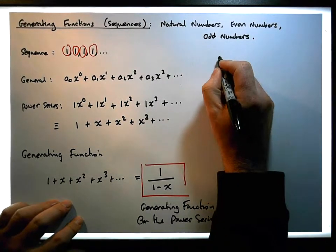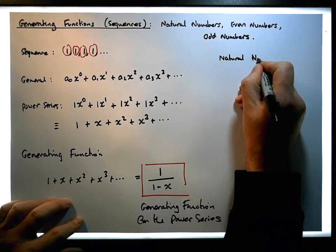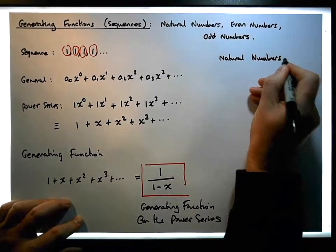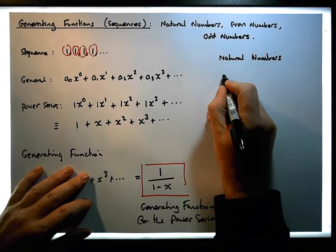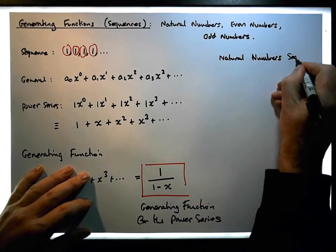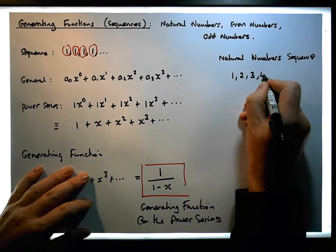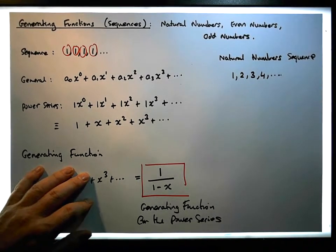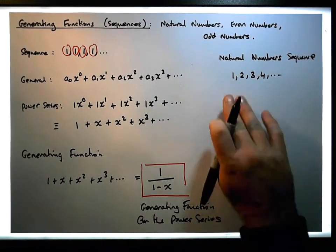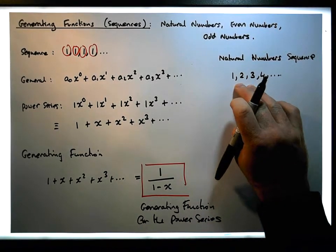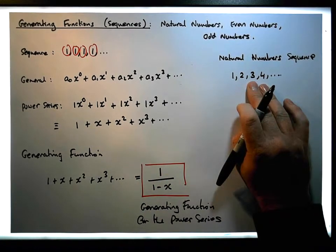Let's consider the natural numbers. Now, obviously we're going to start counting from one. The natural number sequence is simply one, followed by two, followed by three, followed by four, and so on and so forth. So is it possible for us to calculate a generating function for that particular sequence?